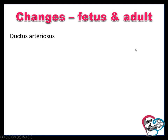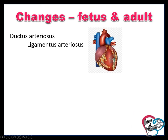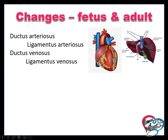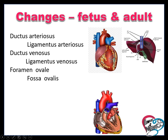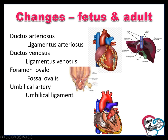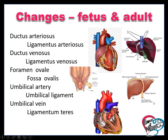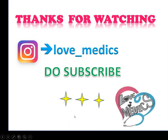After delivery, there are changes between fetal circulation and adult circulation known as remnants. Ductus arteriosus is converted into ligamentum arteriosus. Ductus venosus is converted into ligamentum venosus — here the ligamentum venosus is present. Umbilical vein is converted into ligamentum arteriosus. Thanks for watching.